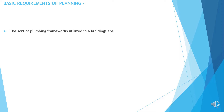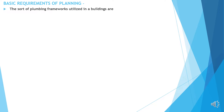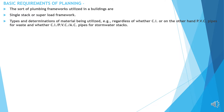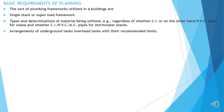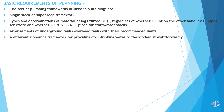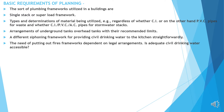Basic Requirement of Planning. The sort of plumbing framework utilized in a building — single stake or superlade framework. Types and determination of material being utilized, for example, whether CI or other brand PVC pipes for waste, and whether CI, PVC, or AC pipe for stormwater stakes. Arrangements of underground tanks with recommended links. A different stiffening framework for providing civil drinking water to the kitchen directly. The need of firefighting frameworks dependent on legal arrangement. Is adequate civil drinking water accessible?